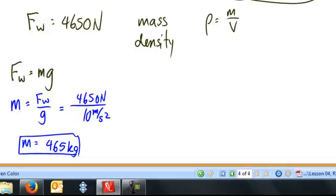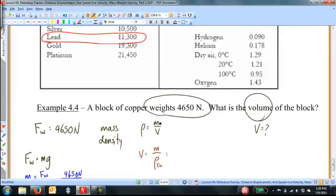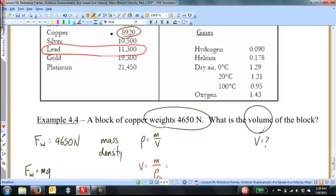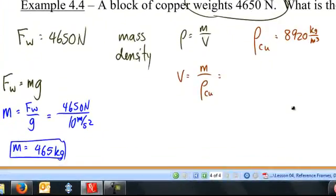Now we want to know what the volume is. The density formula tells us that the volume is equal to the mass divided by the density. If I knew what the copper was, which is a number that I can look up in this table. It's 8920 kilograms per cubic meter. Then I could use that with the mass that I found in the previous part of the problem. Let's put these things together. The mass is 465 kilograms. The density from the table is 8920 kilograms per cubic meter.